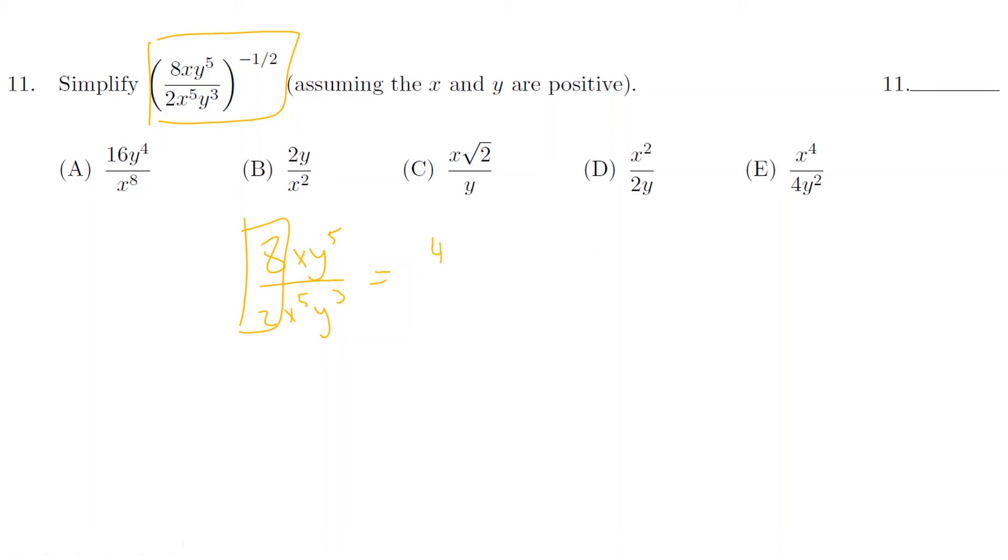8 over 2 is just 4. If you look at x's, let me actually change the color so you guys can see. So let's say purple. So we're looking at x. x over x to the 5th. So it's going to be x to the 4th at the bottom. And last color change for now. Let's do red. All right, so y to the 5th, y to the 3rd. So y squared. So what we have is we have 4y squared over x to the 4th to the power of negative 1 half. Still looks complicated.